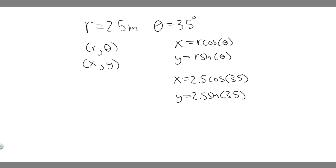So go ahead and plug these in. If you do x equals 2.5 times the cosine of 35, you're going to get 2.0478 and so on. And then 2.5 times the sine of 35, that is 1.433941 and so on.